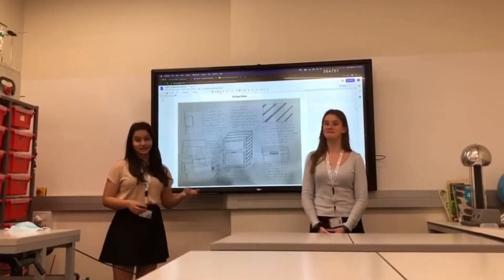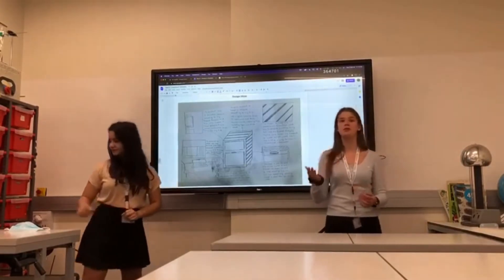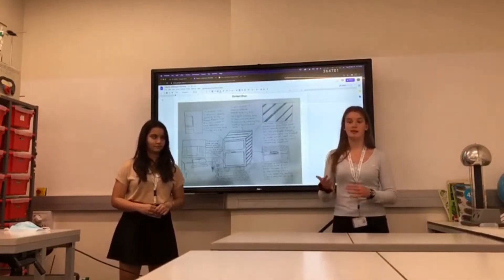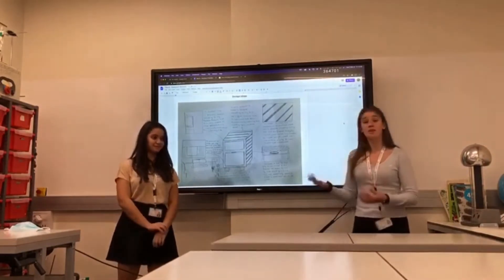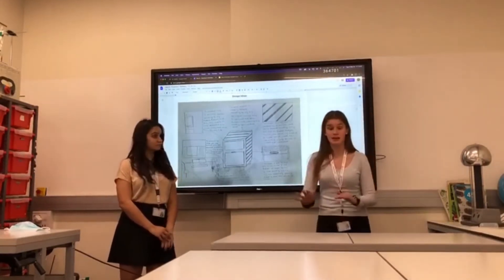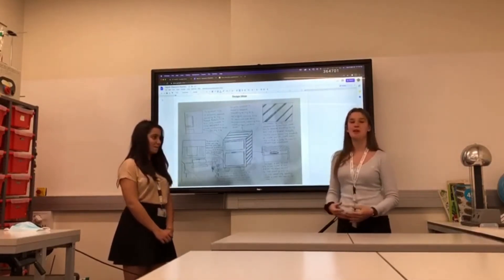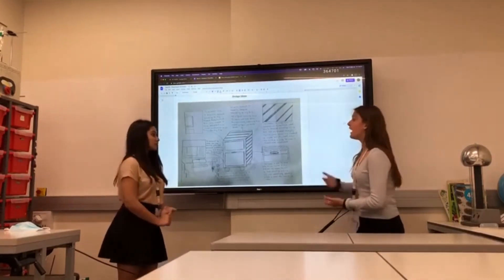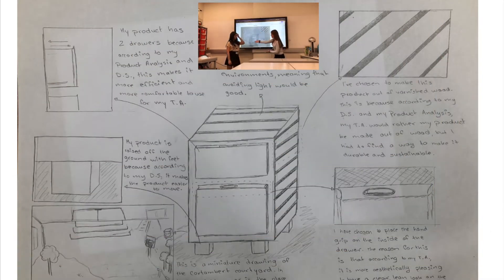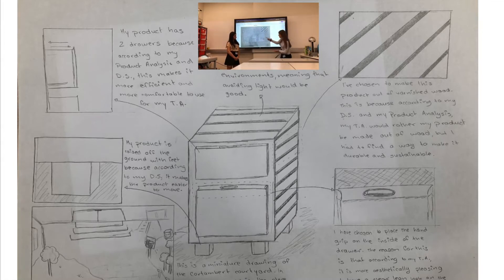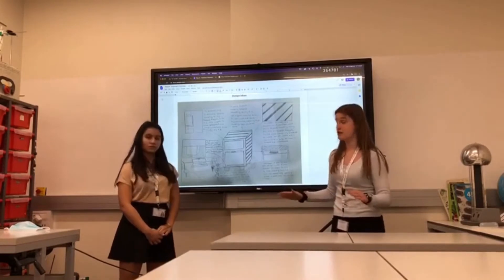The second section in Criterion B is design ideas. There are usually three — some teachers might ask for four, but we recommend three because that's the minimum and it's a lot of work. Design ideas are three distinct ideas that would be feasibly made into a product once you reach the manufacturing stage. My product is a compost bin, so I had to make three different compost bin designs. As you can see, there's a general idea with different zoom-ins of different areas, plus annotations explaining how each element would impact my target audience.